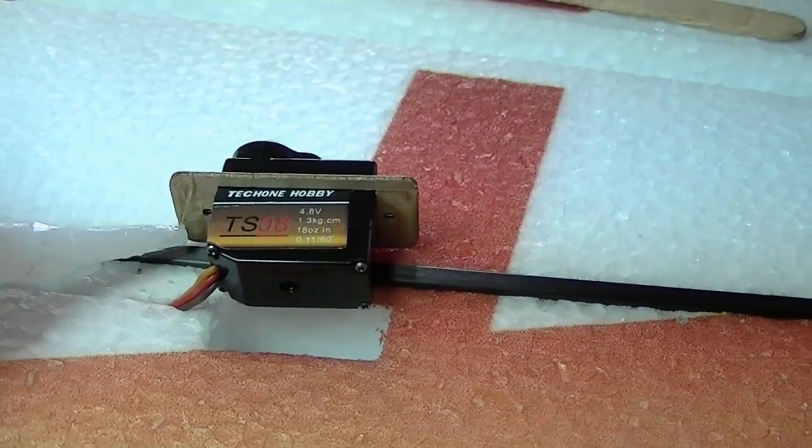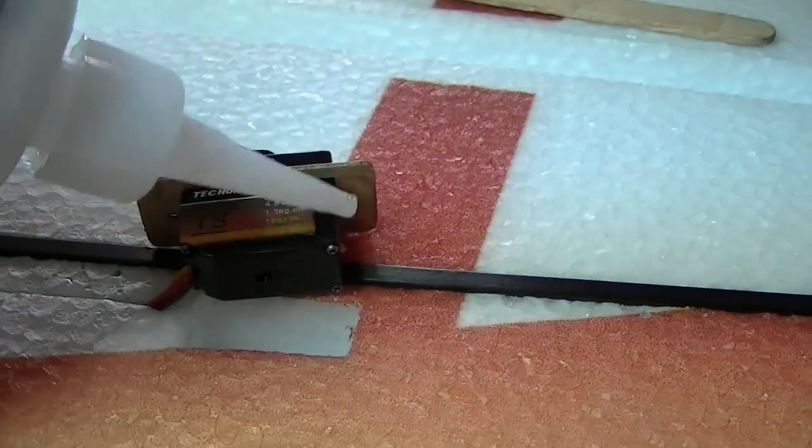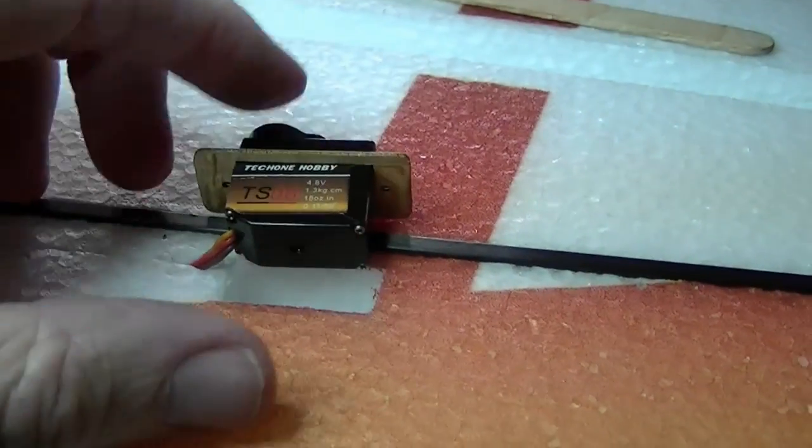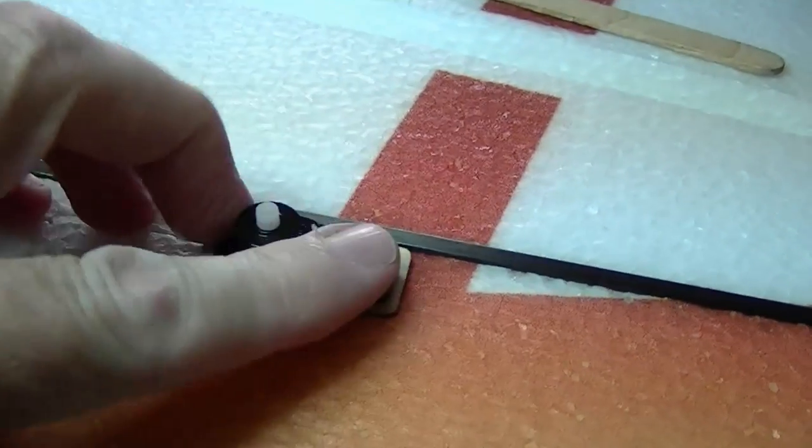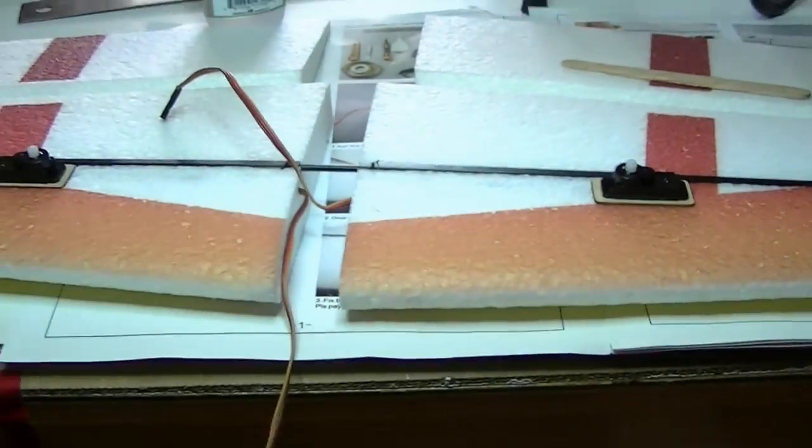Gluing the servo plate in just like the other one. So now both wings are done.